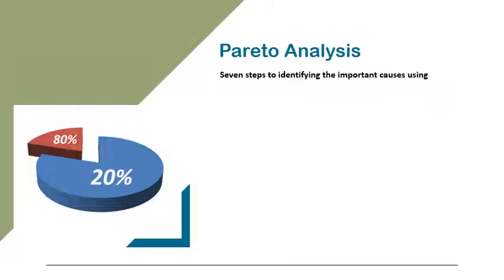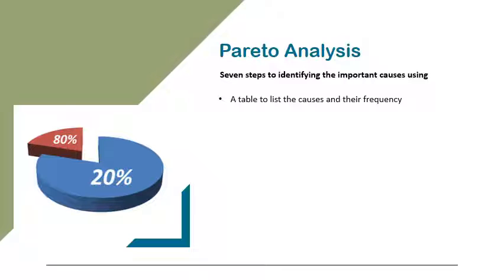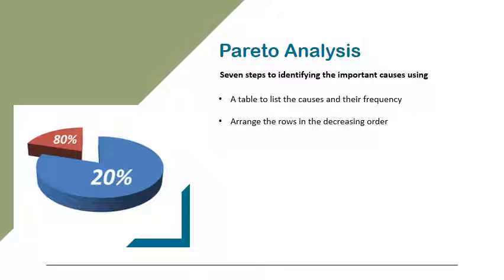7 Steps to Identifying the Important Causes Using Pareto Analysis. Step one: form a table listing the causes and their frequency as a percentage. Step two: arrange the rows in the decreasing order of importance of the causes — for example, the most important cause first.